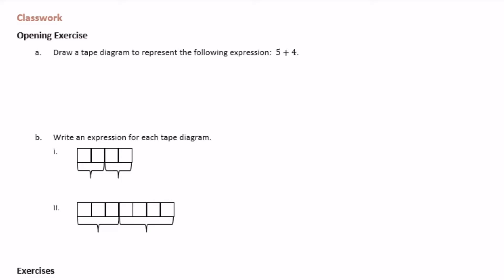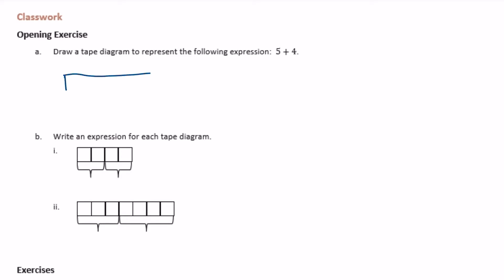So I'm going to draw a tape diagram and I'm going to start with just 5. So there's 5, and then we want to add 4. So I'm just going to tack on to the end of that another 4. So this part is 5 and we want to add 4. So there's my tape diagram representing 5 plus 4.